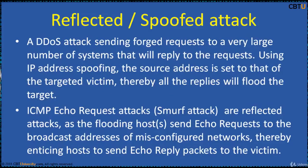A reflected DDoS attack sends forged requests to a very large number of systems that will reply to the request. Using IP address spoofing, the source address is set to that of the targeted victim, so all replies flood the target. ICMP echo requests are used in reflected attacks, where flooding hosts send echo requests to the broadcast address of misconfigured networks, enticing hosts to send echo reply packets back to the victim.